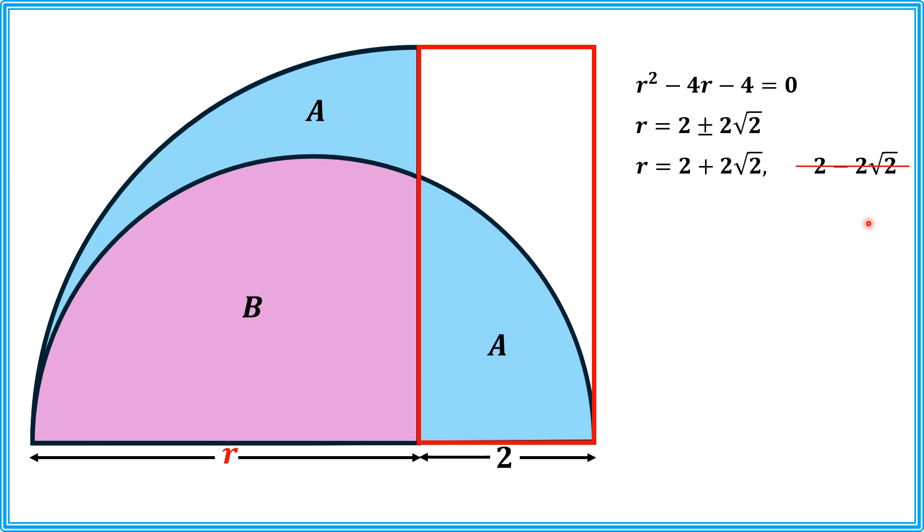and is not a suitable root for the solution because R is a length and length can never be negative. So, the only suitable root is R equals 2 plus 2 times square root of 2.